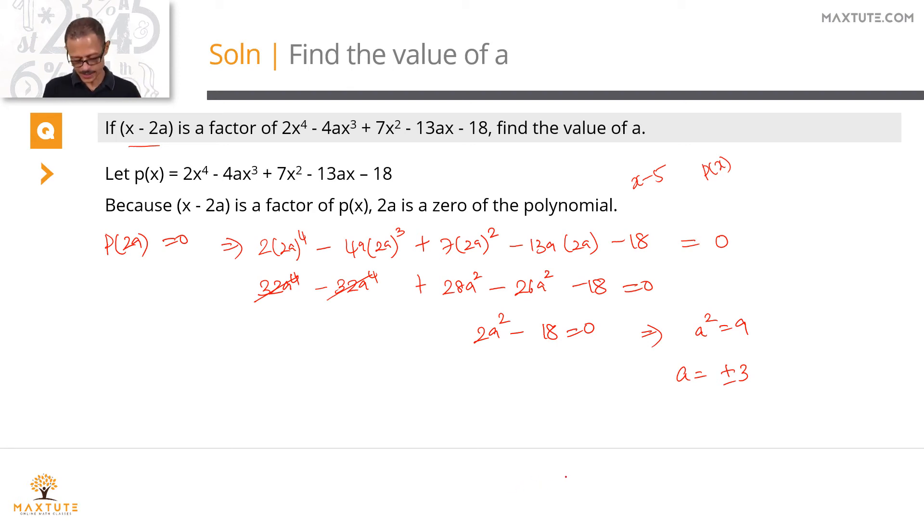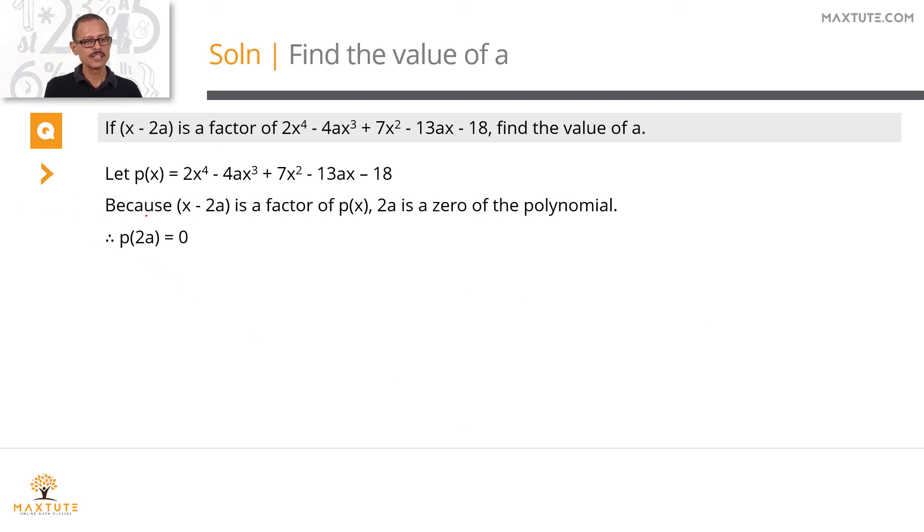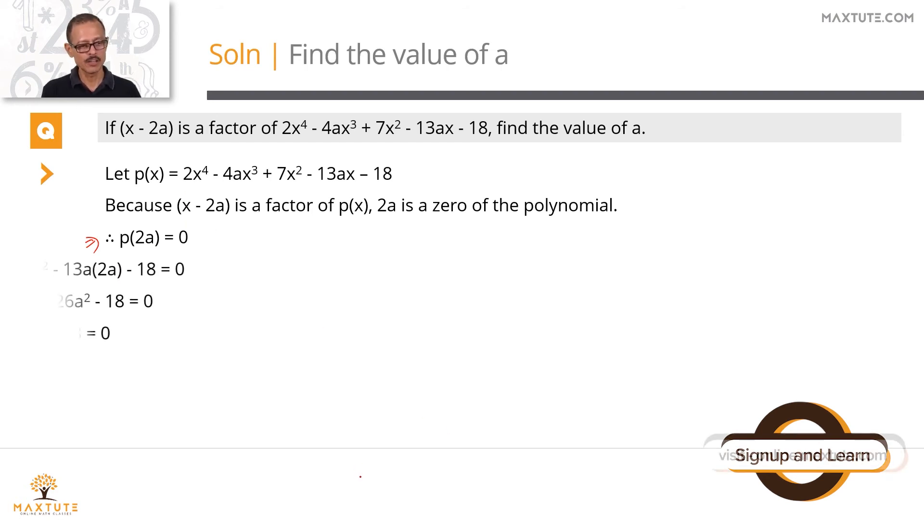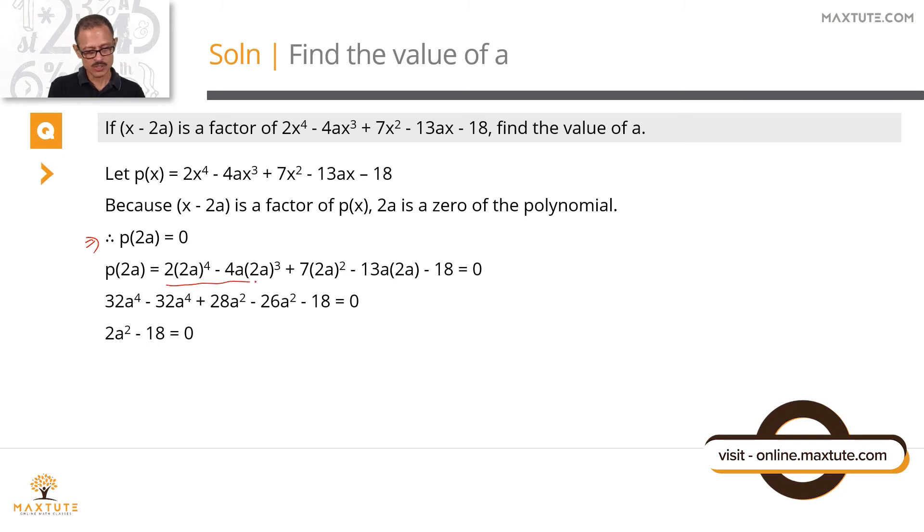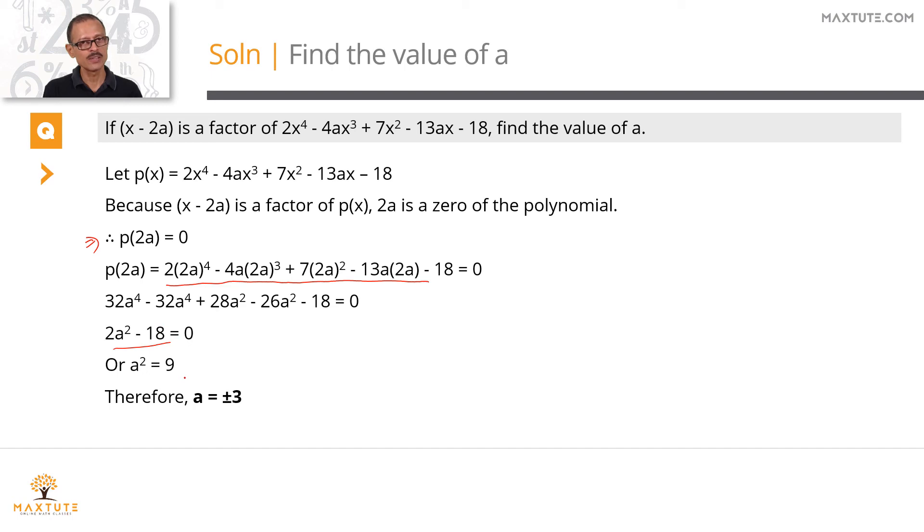Quick recap in printed form. From factor theorem, if x minus 2a is a factor of the given polynomial, then 2a is a zero of the polynomial. From remainder theorem, if 2a is a zero of the polynomial, then p(2a) will be equal to 0. We're going to replace all x with 2a to compute p(2a). Once you have replaced all x with 2a, this simplifies to 2a^2 minus 18 equals 0. Divide both sides by 2 and take the constant to the right-hand side, you'll get a^2 equals 9 or a is equal to plus or minus 3.